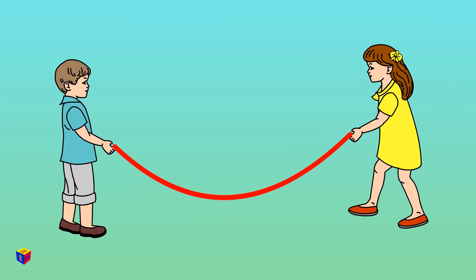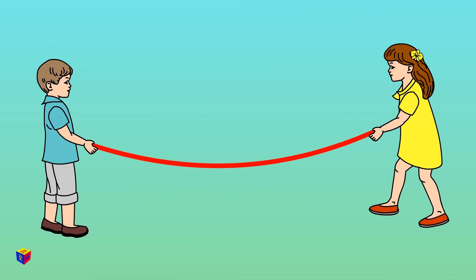We can create a wave model ourselves. For this, we need a simple rope. Together with a friend, take the rope by the ends and move away from each other so that the rope sags but does not touch the ground.